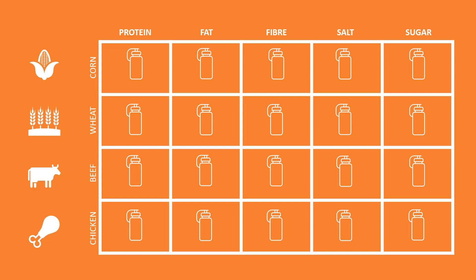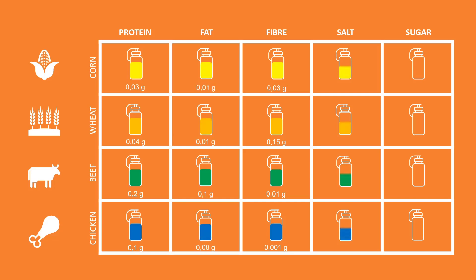For each ingredient, you have the amount of protein, fat, fiber, salt and sugar. We'll split these nutrients into two types. First type: protein and fiber — we want to ensure a minimum level per bar as they are beneficial to our customers. On the contrary, we want to reduce the amount of fat, salt and sugar, so we are going to set a maximum weight for each of them.